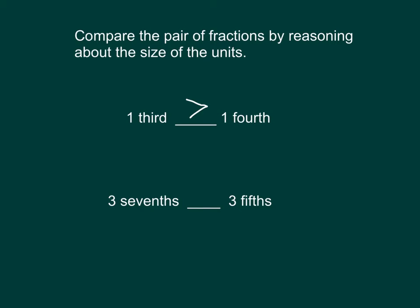In our next problem, we are looking at three-sevenths and three-fifths. Let's write that out. You'll notice that the numerators are the same — that is, the number of units that we're looking at is the same. Sevenths are smaller than fifths. So if sevenths are smaller than fifths, then three-sevenths is less than three-fifths.